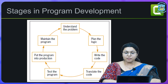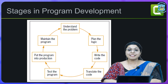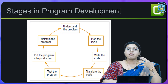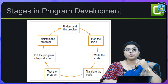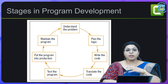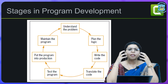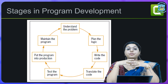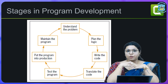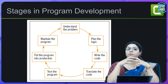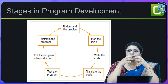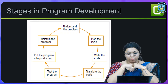Stages in program development — how do we write or build our program? The first stage is understanding the problem. When thinking of writing code, we should first know why we want to write it: what is the objective, what is the problem statement, what do I want to do and how should I do it? That is understanding the problem.